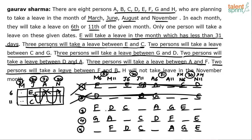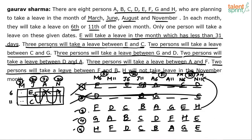Two persons will take a leave between F and B: F dash dash B. After placing B, only H is left, and H must fill the remaining position. But the last clue says H will not take leave in November. In case 3, H falls in November — so case 3 is wrong. In case 4, H also falls in November on November 6th — so case 4 is also wrong.